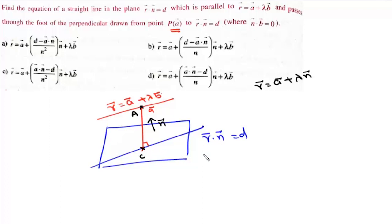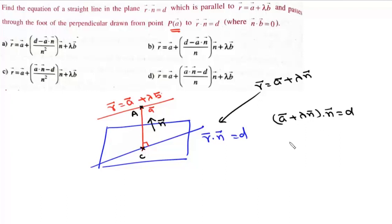Now we find the point of intersection with the plane. Substituting r into r·n = d, we get (a + λn)·n = d, which gives λ = (d − a·n) / |n|².